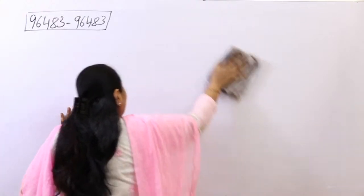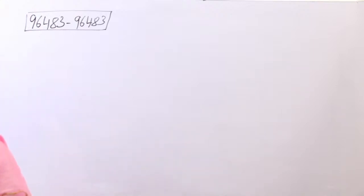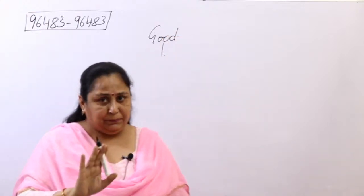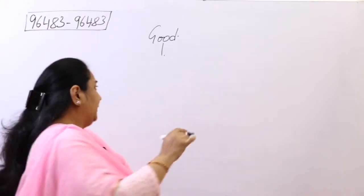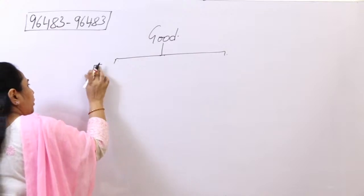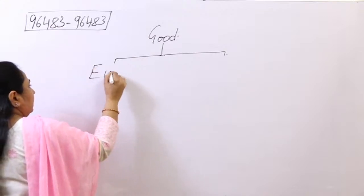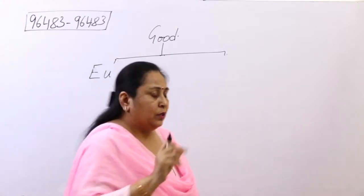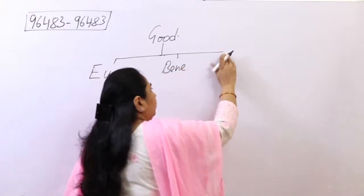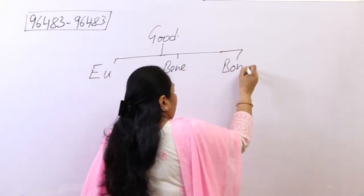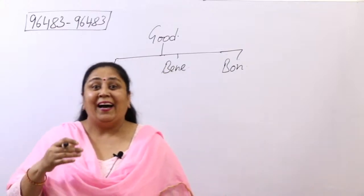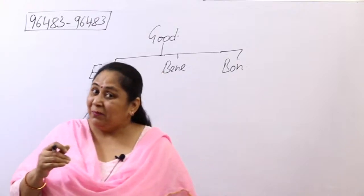Today our first root is 'good,' meaning अच्छा. The root 'good' has three origins in English. The first root is 'eu,' the second root is 'bene,' and the third root is 'bon.' Wherever you find these three — at the beginning, middle, or end of a word — the meaning will relate to goodness. Now let's look at words formed from each of these roots.